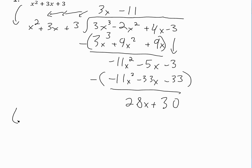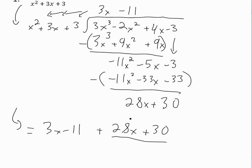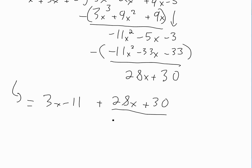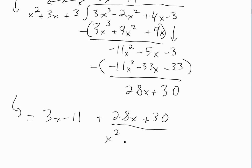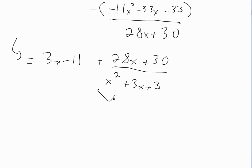The answer equals 3x minus 11, plus the remainder 28x plus 30 divided by x squared plus 3x plus 3. This is where we stop — 28x plus 30 is called the remainder.